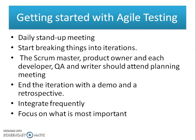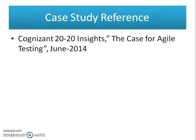Regarding how Cognizant implemented Agile testing: they started with daily stand-up meetings and began breaking work into iterations. The scrum master, product owner, and each developer, QA, and writer should attend planning meetings. They incorporated iteration demos and retrospectives, integrated continuously, and focused on what is important. This case study was referenced from Cognizant's 2020 Insights: The Case for Agile Testing.